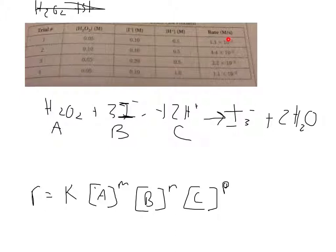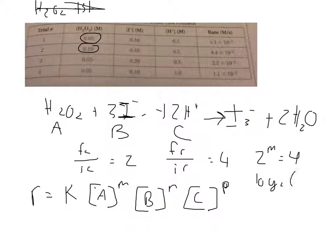You take your final concentration divided by the initial concentration, so it's 0.1 divided by 0.05. Then you take your final rate divided by your initial rate, so that's 4.4 divided by 1.1, both times 10 to the negative 2, so that equals 4. To solve for M you say 2 to the M equals 4, and you solve for M. You can do that by doing log base 2 of 4, and that will give you M. It should equal 2, so M equals 2.